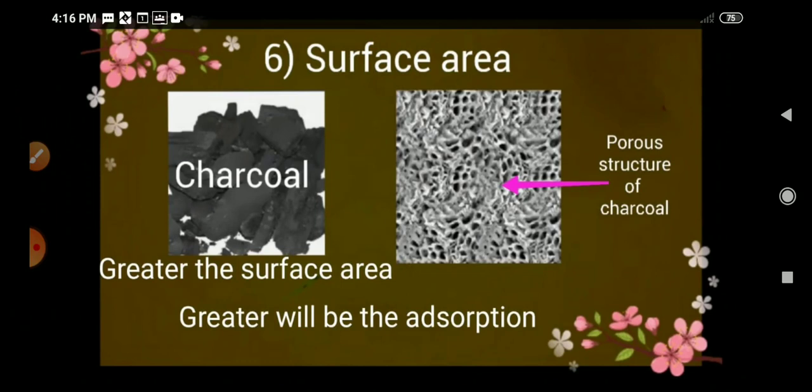Charcoal is a very good adsorbent because of its porous structure, as shown in the figure. Due to its porous structure, charcoal has a large surface area. Since adsorption is a surface phenomenon, greater the surface area, greater will be the adsorption. So we can conclude: greater the surface area, greater will be the adsorption.